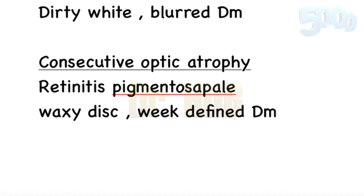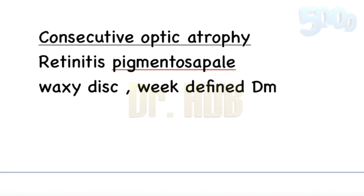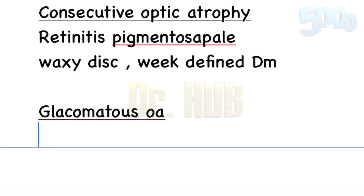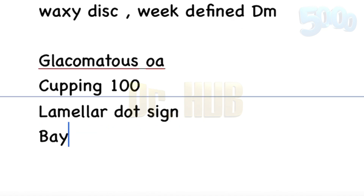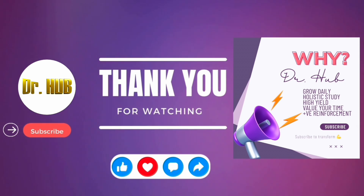Next we move on to glaucomatous optic atrophy, also known as cavernous optic atrophy. There is significant cupping — cupping is 100 percent — along with bayoneting of vessels and a lamellar dot sign. These last two features are very important. To learn and grow daily, please do subscribe.